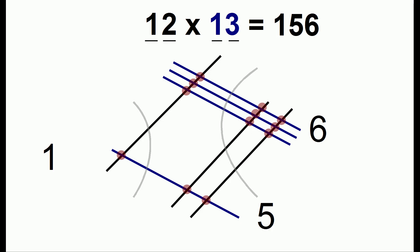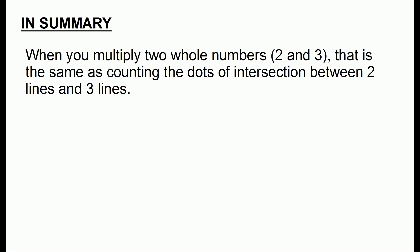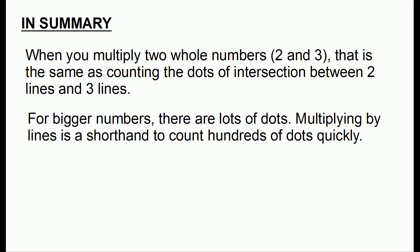So now you understand how multiplying by line works. The summary of this is that when you multiply two whole numbers, that's the same as counting the number of dots of intersection between them. For bigger numbers, there are going to be lots of dots to count, and multiplying by lines is a shorthand to count hundreds or even thousands of dots very quickly.